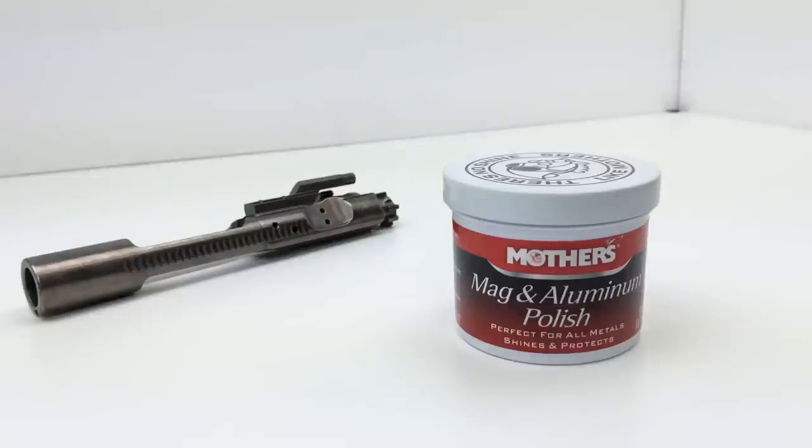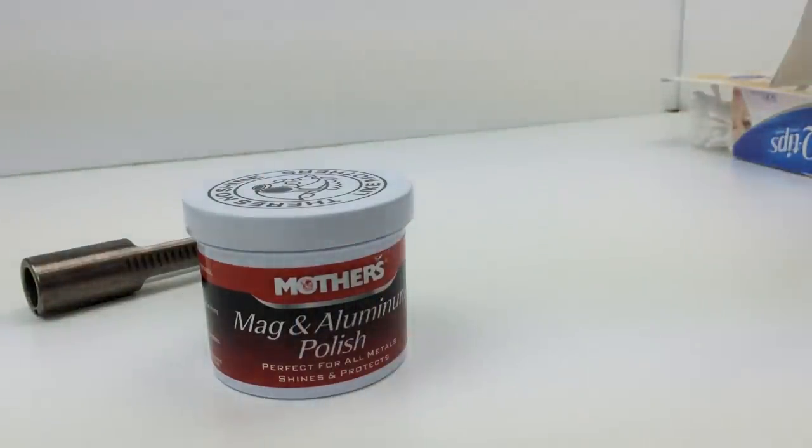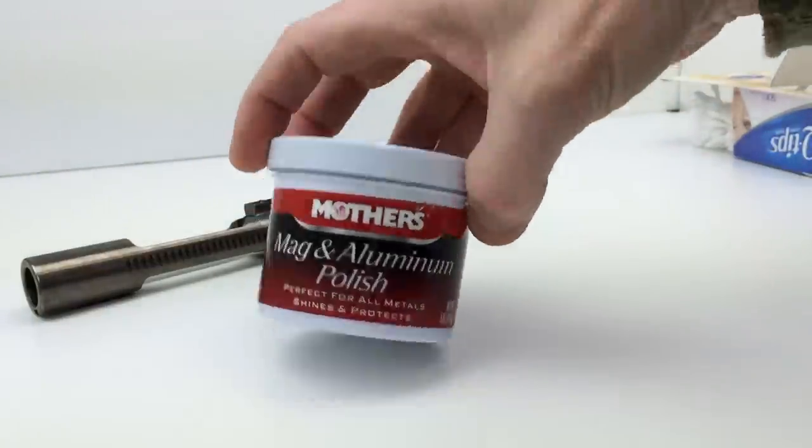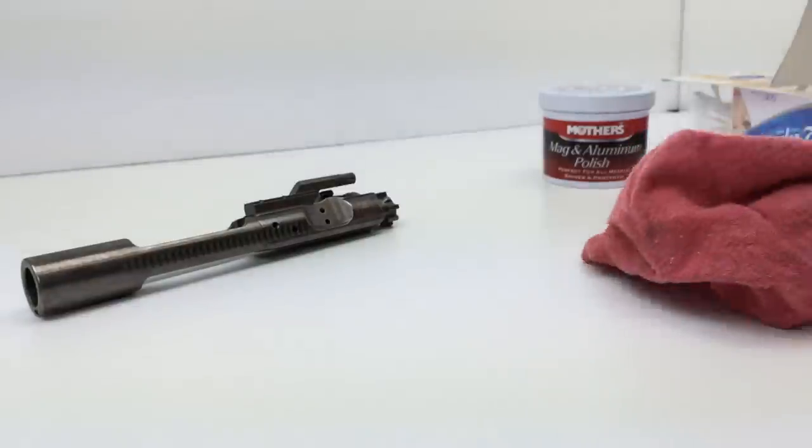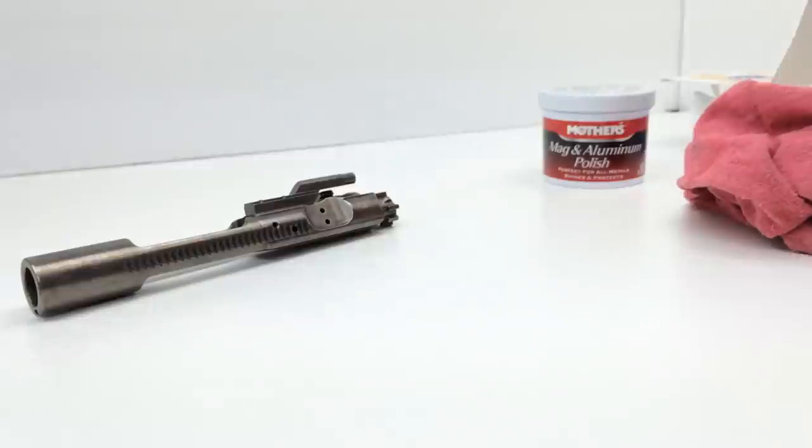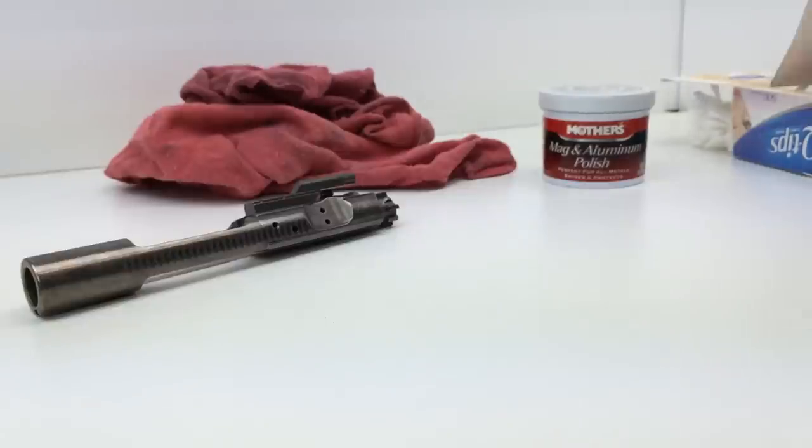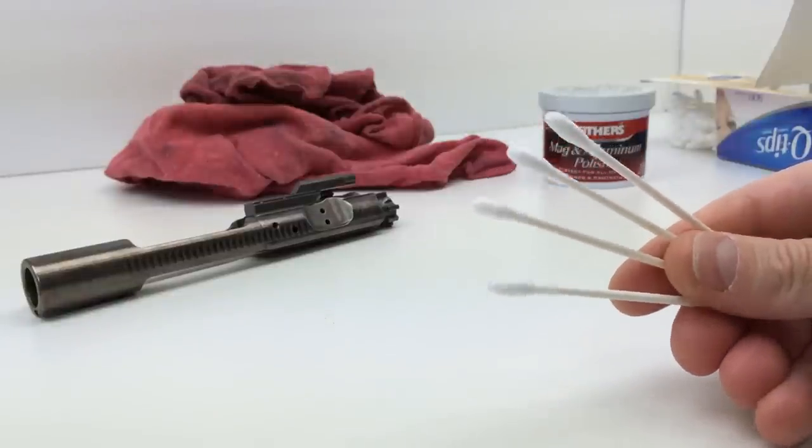So, this polish is primarily made for that, but I found that it works very well on nickel boron bolt carrier groups. What else are we going to need? We're going to need a couple of rags. So, we have our Mother's polish. This is what I like. I've tried Neverdoll polish. I don't like Neverdoll. It doesn't shine like the Mother's polish does.